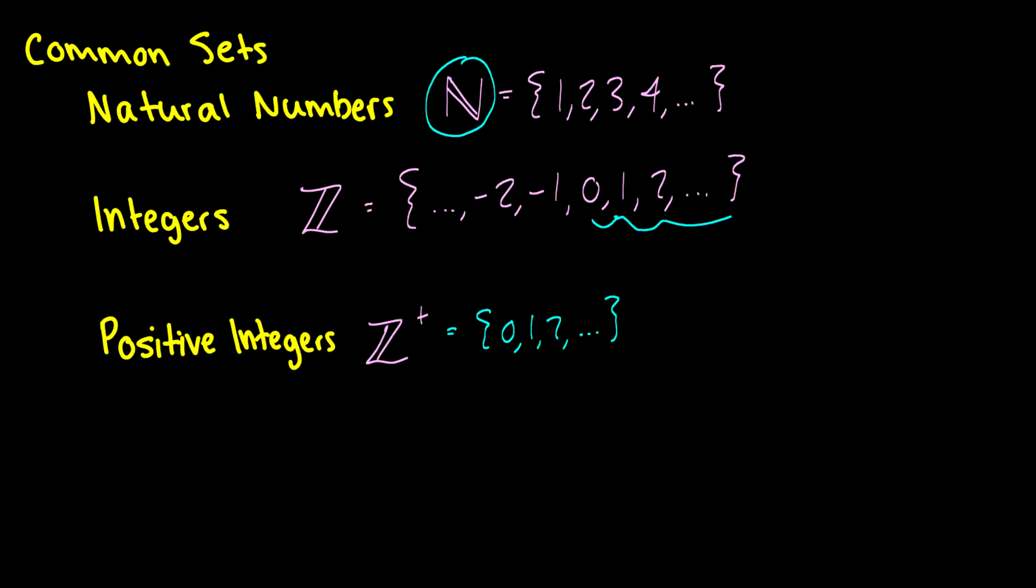Now these are common sets. So there's a couple more that we'll cover in due time. We have this, which is the set of rational numbers, which we call Q. We have the set of real numbers, which is R.